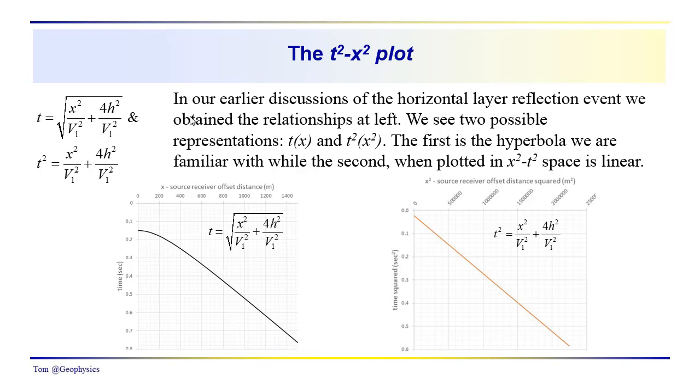For the horizontal layer reflection event, we're dealing with a linear relationship between T and X that turns out to be hyperbolic in this particular form here. We showed that you could determine the thickness of the layer and the velocity of the layer, but we had to use the direct arrival here.